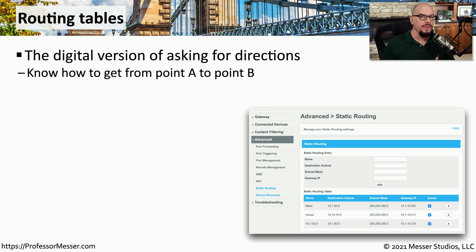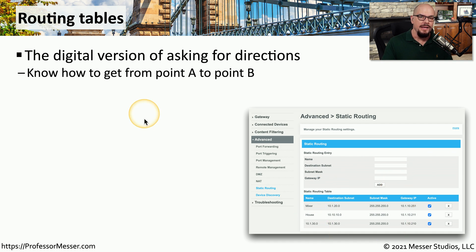If you're working with layer 3 devices, then you're dealing a lot with routing tables. Routing tables are the way your device knows where it should be sending traffic. As traffic is inbound to this layer 3 device, the destination IP address will be examined and compared against the routing table, which will then either forward that traffic to the next hop or drop it because there was no entry for that destination.